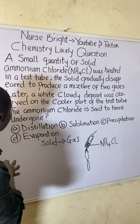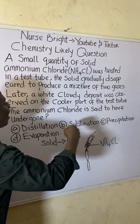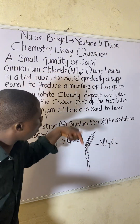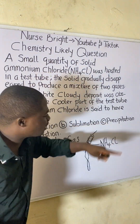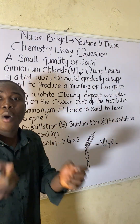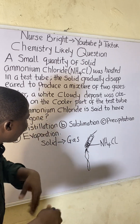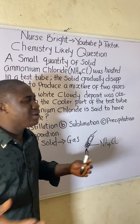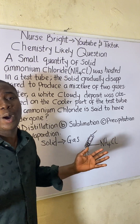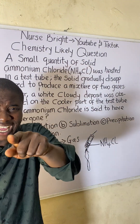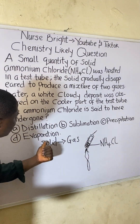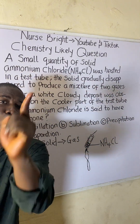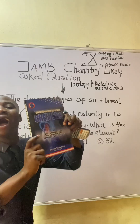The question is asking what process ammonium chloride underwent. Ammonium chloride was a solid before heating. The compound changed its state from solid to gas without passing through any liquid form.